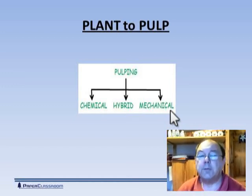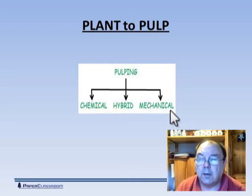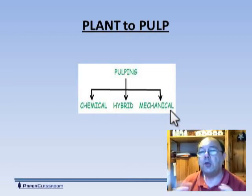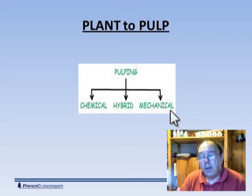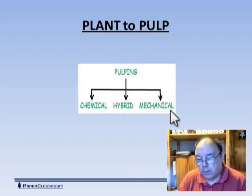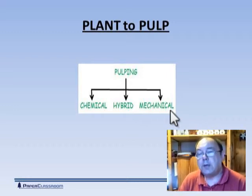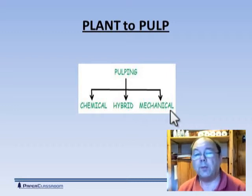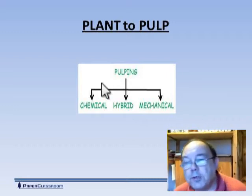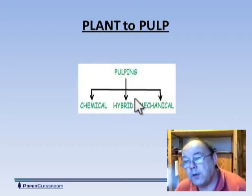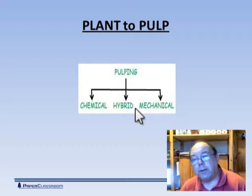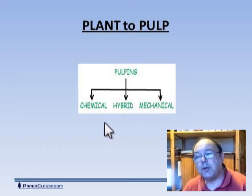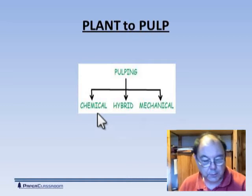Later we developed more controllable machinery — the refiner — and chopped the trees into wood chips of similar sizes used for chemical pulps. And then of course there's a newer development: hybrid pulping, which combines some mechanical action and some chemical action.